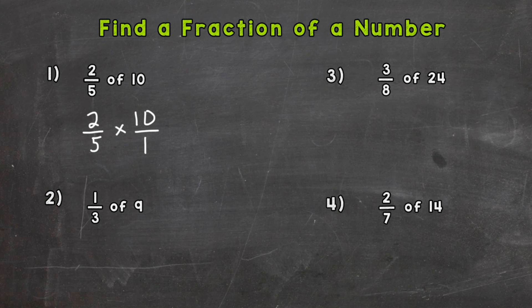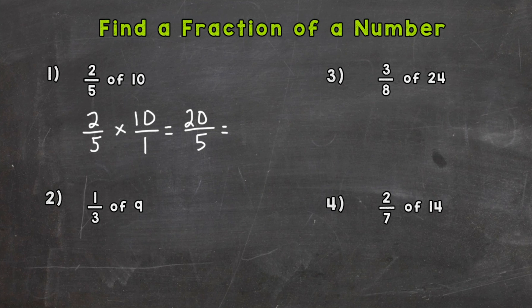You can always put a whole number over 1 and it does not change the value of that number. To multiply these fractions, go straight across: 2 times 10 is 20, and 5 times 1 is 5, so we get 20 fifths. Since that's an improper fraction, we do 20 divided by 5. How many whole groups of 5 can I pull out of 20? Four — and that hits 20 exactly with nothing left over. So 2 fifths of 10 is 4.